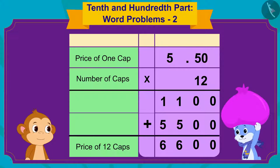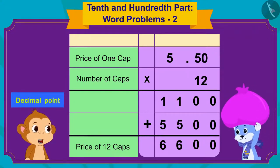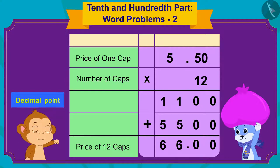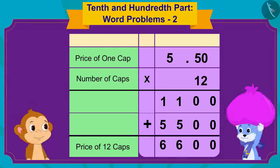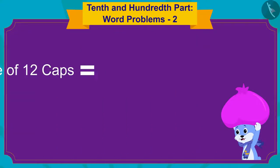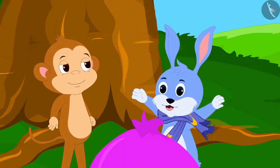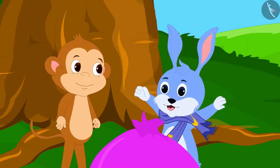Bunny quickly replied: Two digits! Babban said: Absolutely right! So we will write the decimal point in the answer in such a way that there are only two digits after the decimal point, and then we will get our answer. Bunny said: Now I get it! If I put the decimal point here, there will be only two digits after it. Oh wow, I'll earn 66 rupees by selling 12 caps! And Bunny started dancing happily.